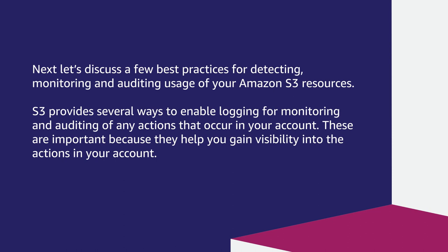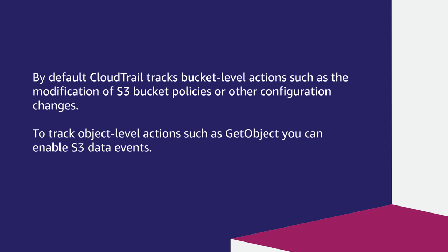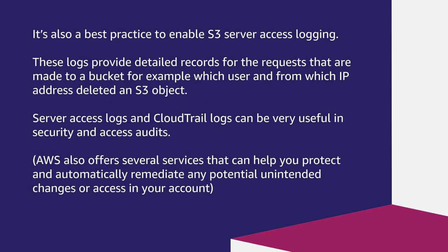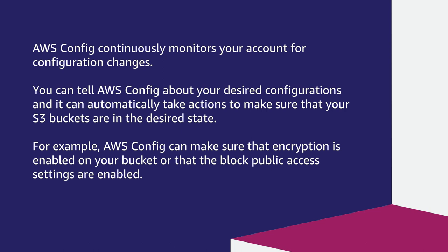Next, let's discuss a few best practices for detecting, monitoring, and auditing usage of your Amazon S3 resources. S3 provides several ways to enable logging for monitoring and auditing of any actions that occur in your account. These are important because they help you gain visibility into the actions in your account. By default, CloudTrail tracks bucket level actions such as the modification of S3 bucket policies or other configuration changes. To track object level actions such as get object, you can enable S3 data events. It's also a best practice to enable S3 server access logging. These logs provide detailed records for the requests that are made to a bucket — for example, which user and from which IP address deleted an S3 object. Server access logs and CloudTrail logs can be very useful in security and access audits. AWS also offers several services that can help you protect and automatically remediate any potential unintended changes or access in your account.